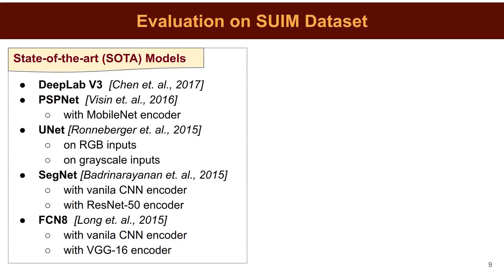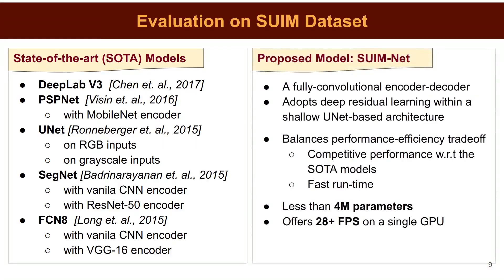We perform a comprehensive benchmark evaluation of several state-of-the-art semantic segmentation approaches: DeepLab, PSPNet, UNet, SegNet, and FCN. We tried several variants of these models based on their encoding network and input modes. In addition, we present a fully convolutional encoder-decoder model named SWIMnet, which incorporates deep residual learning within a shallow unit-based architecture to provide competitive segmentation performance while ensuring a fast end-to-end runtime.